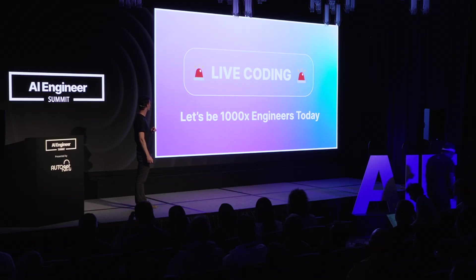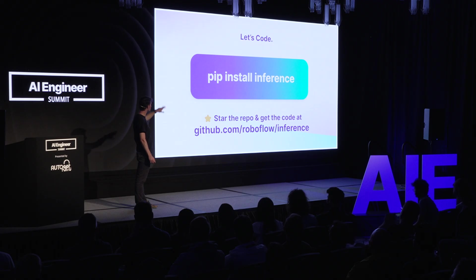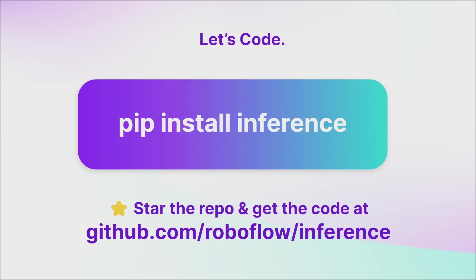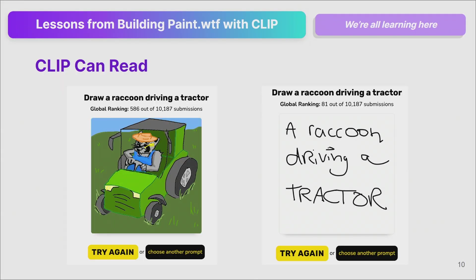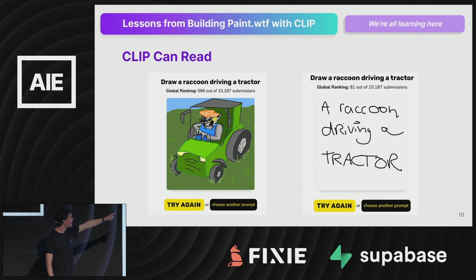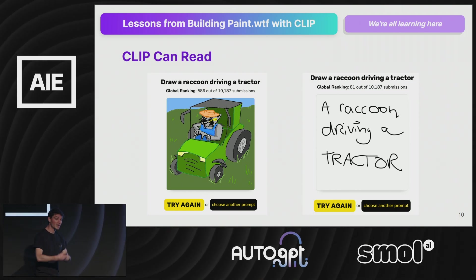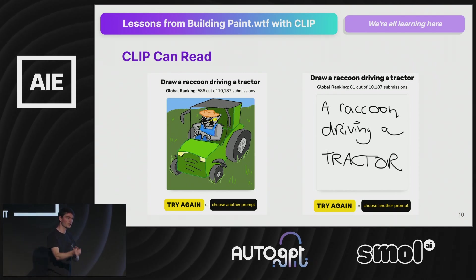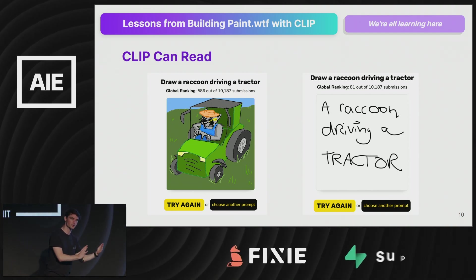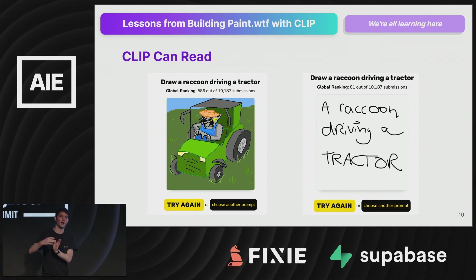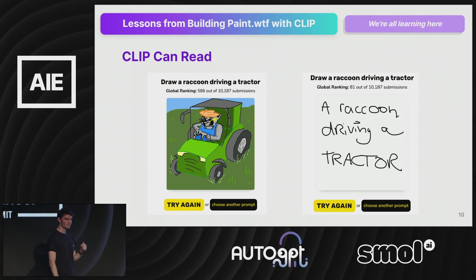Let's jump back to the fun stuff. I promised I'd share lessons from the trials and tribulations of putting things on the internet for strangers to submit images. First: CLIP can read. Users were submitting things — someone ranked 586 out of 10,187 with a drawing, while another user just wrote 'a raccoon driving a tractor' in text and ranked 81. The way we fixed this is we used CLIP to moderate CLIP: if CLIP thinks the image is more similar to a bunch of handwriting than to the prompt, penalize it. Joseph won, internet zero.